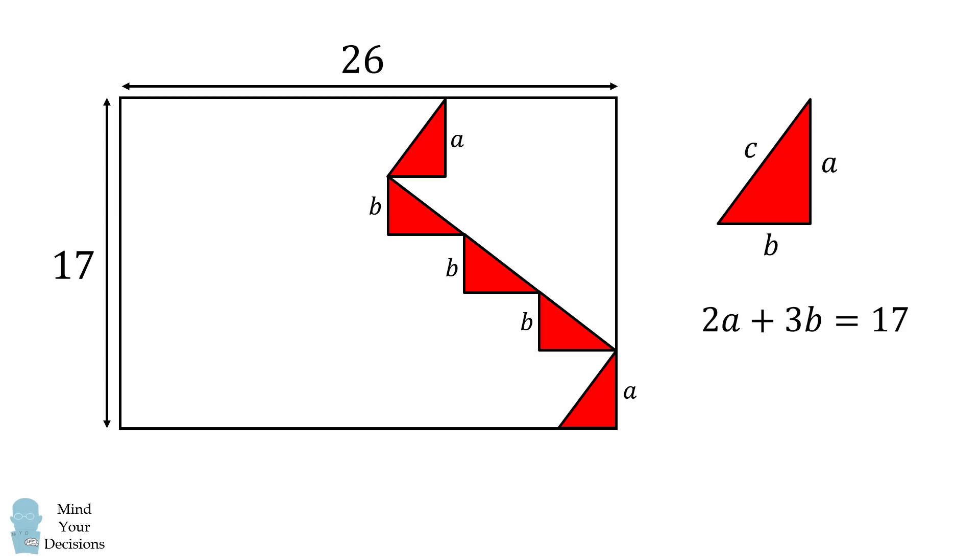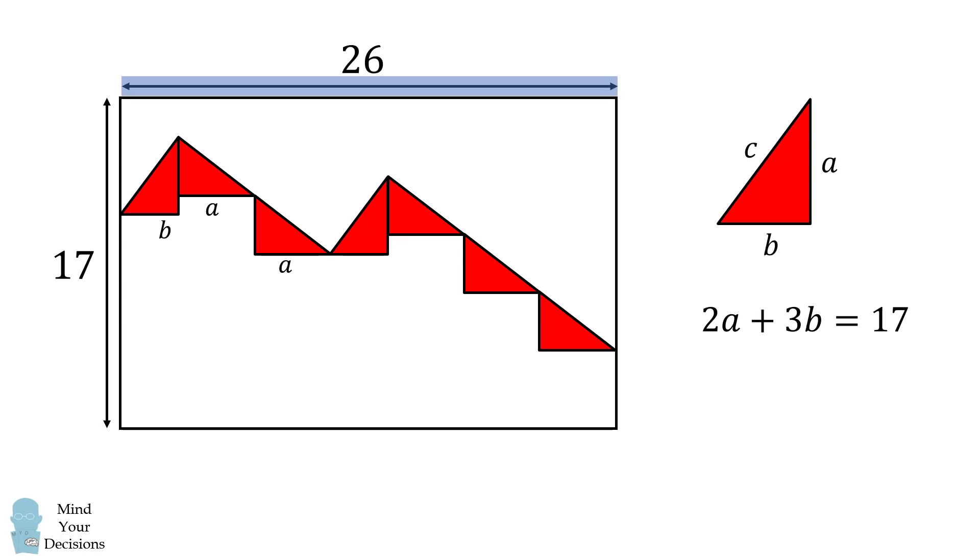We'll now focus on the horizontal dimension of 26. We'll label the legs of the right triangles accordingly. We'll get another equation. We get that 5a plus 2b is equal to 26.